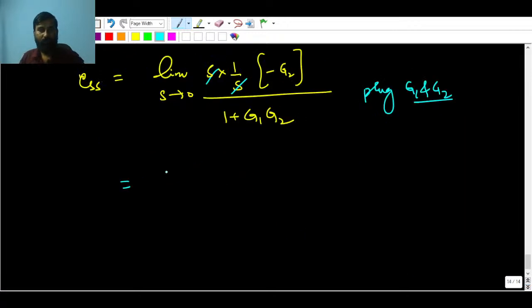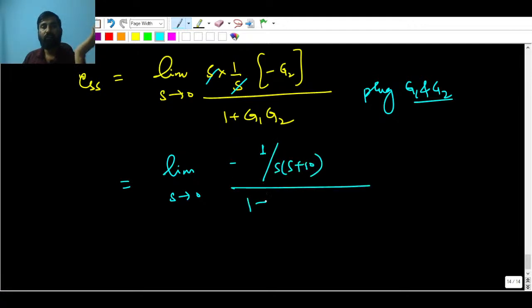So your G1 is 10, limit s tending to 0, G1 is 10. I mean do not keep G1. Again, I am going to make mistake here. So keep G2 there. G2 is going to be 1/(s(s+10))/(1 + 10/(s(s+10))). Moving forward, if you will simplify this guy.